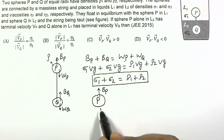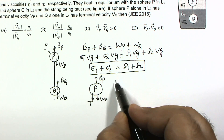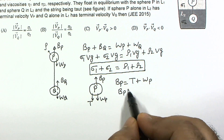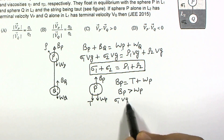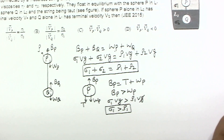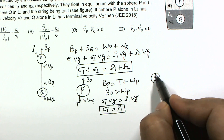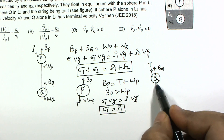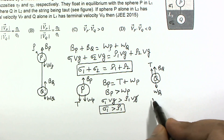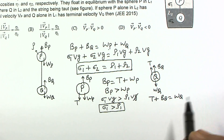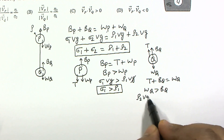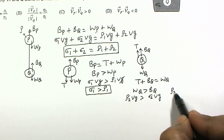For sphere P, the forces are buoyancy force upward and weight plus string tension downward. Balancing these: buoyancy force equals tension plus weight. This means buoyancy force is greater than weight, so σ1·V·g > ρ1·V·g, giving us σ1 > ρ1. For sphere Q, tension plus buoyancy force equals weight, so weight exceeds buoyancy: ρ2·V·g > σ2·V·g, giving us ρ2 > σ2.